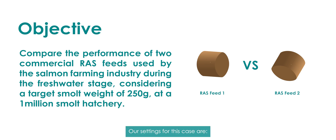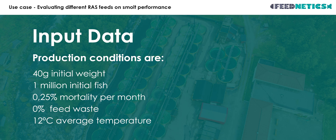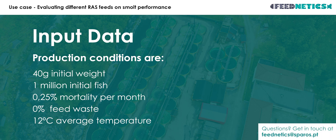Our settings for this case are: 40 grams initial weight, 1 million initial fish, 0.25% mortality per month, 0% feed waste, and 12 degrees Celsius average temperature.